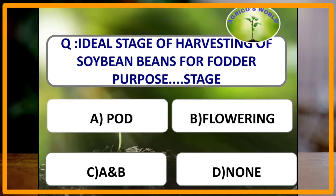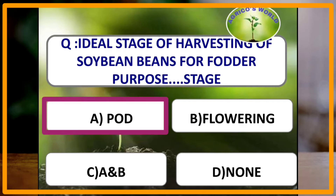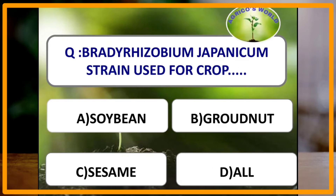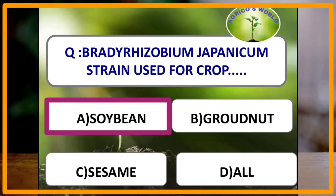Ideal stage of harvesting of soya bean for fodder purpose is? Pod formation stage is the ideal stage of harvesting soya bean. Bradyrhizobium japonicum strain is used for which of the following crops? Bradyrhizobium japonicum is used for soya bean and it also fixes 40 kgs of nitrogen per hectare.